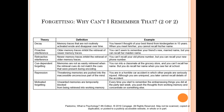Cue-dependent forgetting means memories aren't easily retrieved when the cues don't match the original context. You run into a classmate at the grocery store — you'd know his name in the classroom, but at the grocery store you can't remember it, because the classroom primed you to the name but the grocery store doesn't. I often remember my students' names by where they're sitting. If they're in the correct seat, I remember. But if they stand up after class and I can't associate them with their seat, I forget their name entirely.